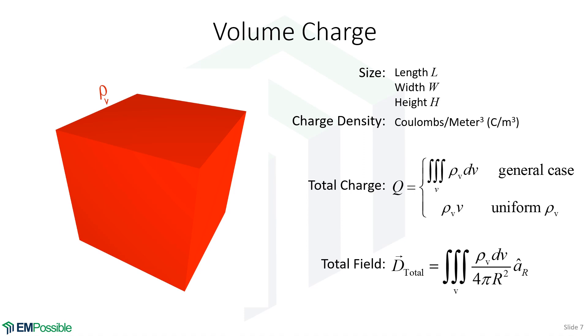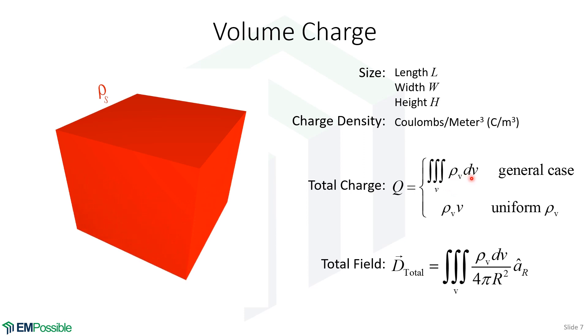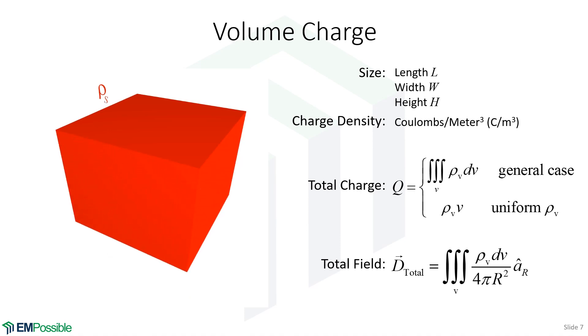To calculate total charge, we integrate through the volume. So that is a triple integral of the charge density times the differential volume dV. In the very special case where the charge density is constant or uniform throughout the entire volume, it's just the charge density multiplied by the volume.